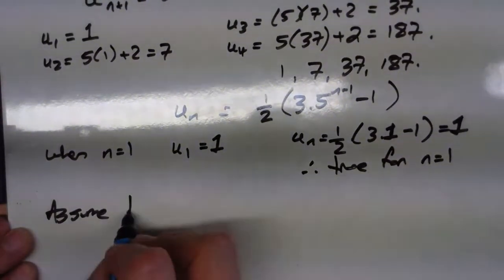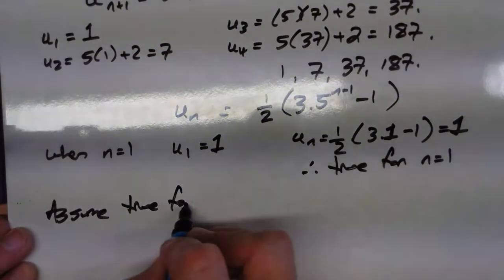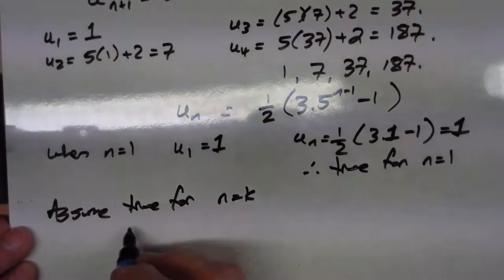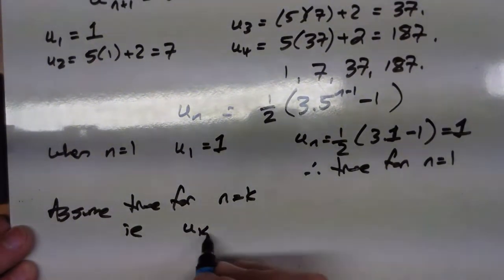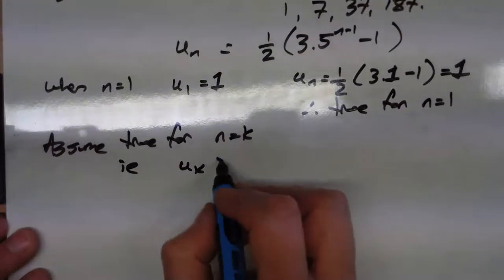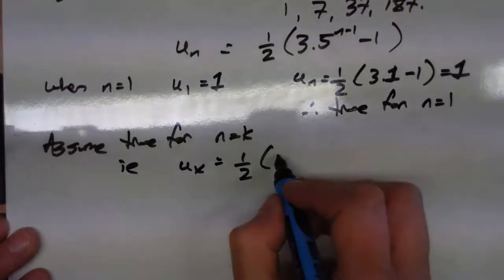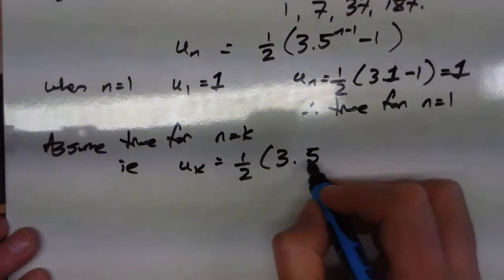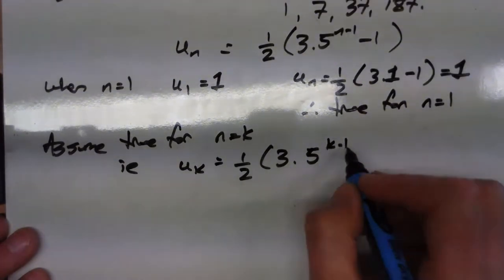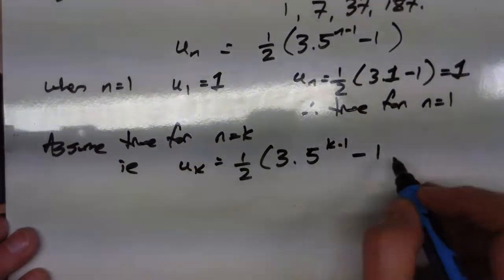Assume true for n equals k, i.e. uk is equal to a half 3 times 5 to the k, take away 1, take away 1.